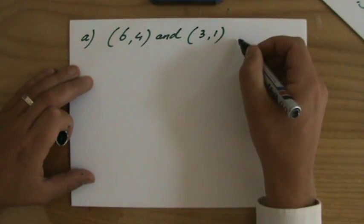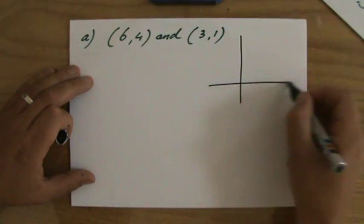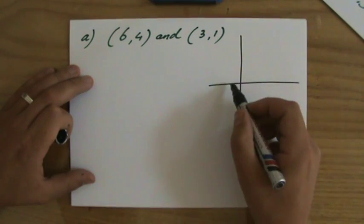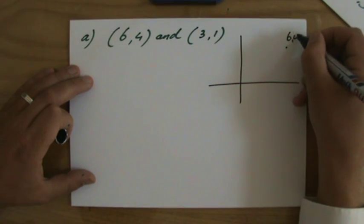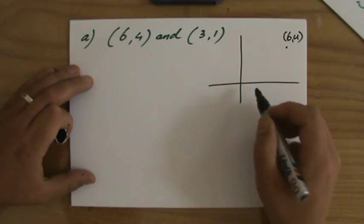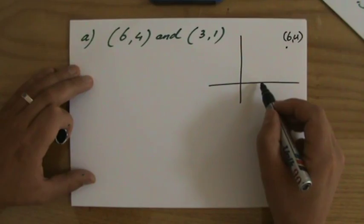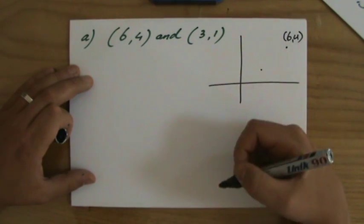What do I do? I'll make a quick sketch. So (6,4), that's roughly there, and (3,1), that's roughly over there. So we're interested in the length of that line.